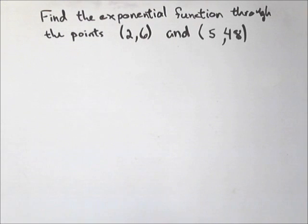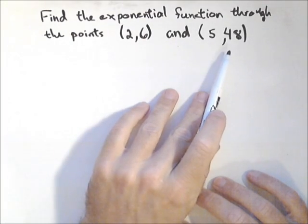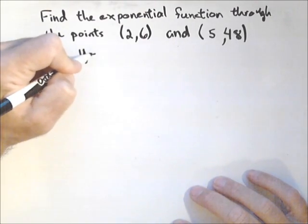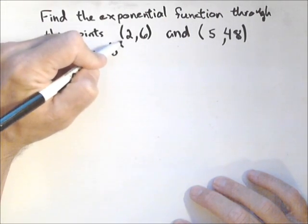In this video, we're going to talk about how we can find an exponential function going through two points. We're going to use the points (2, 6) and (5, 48). And we're going to build an exponential model that is y equals a, b to the x.